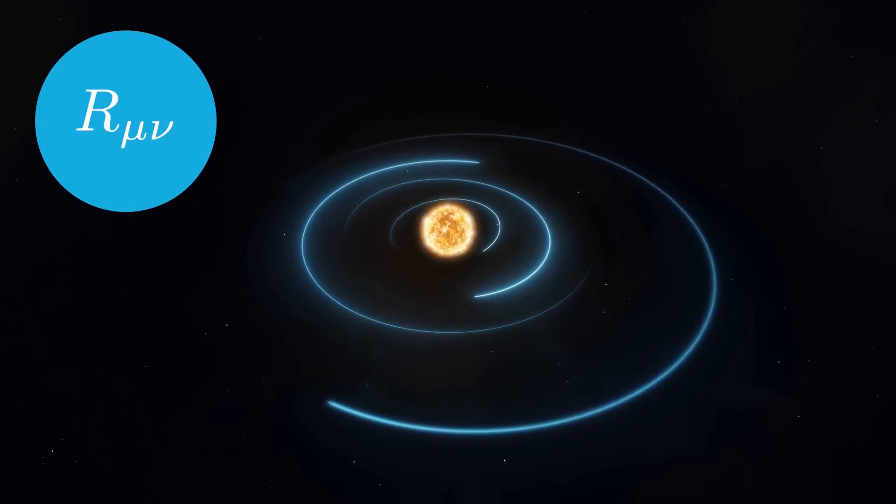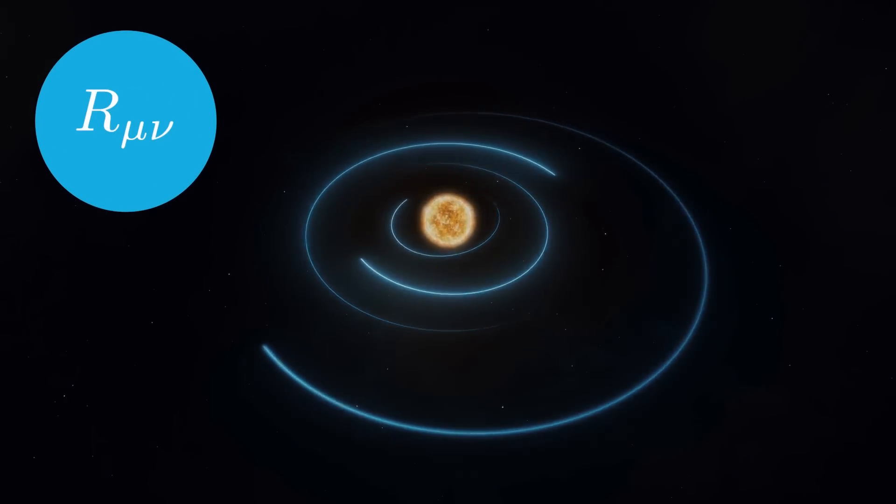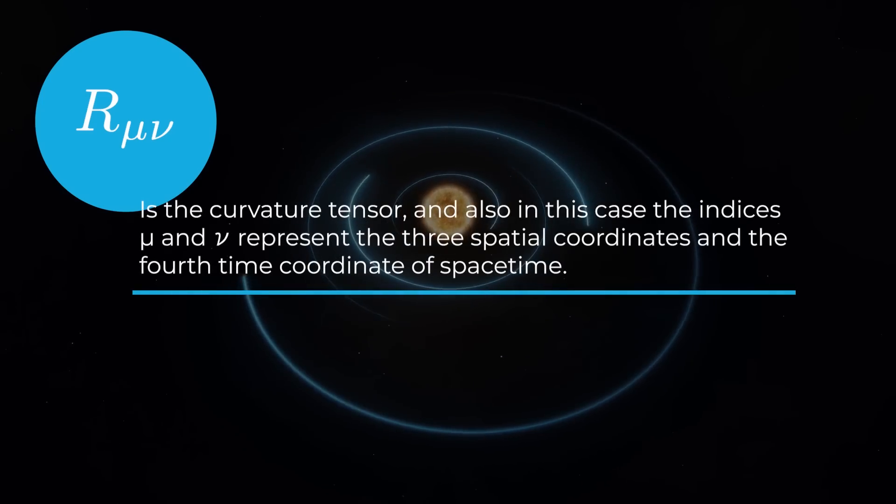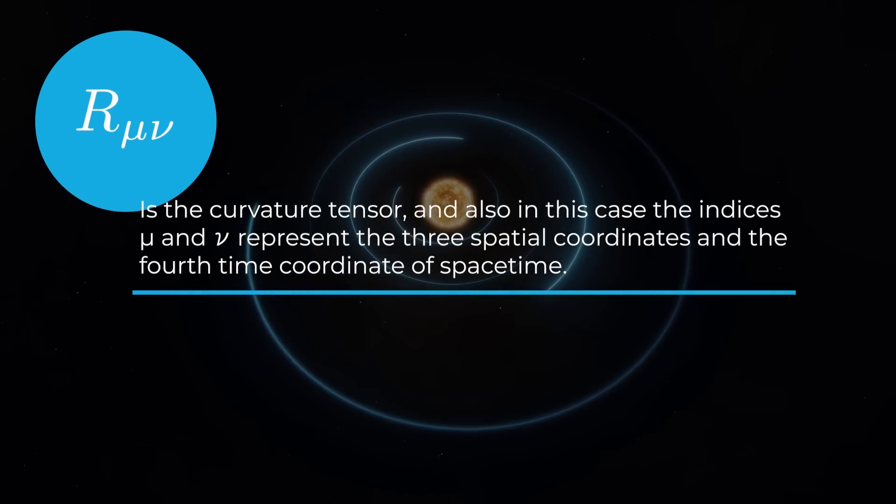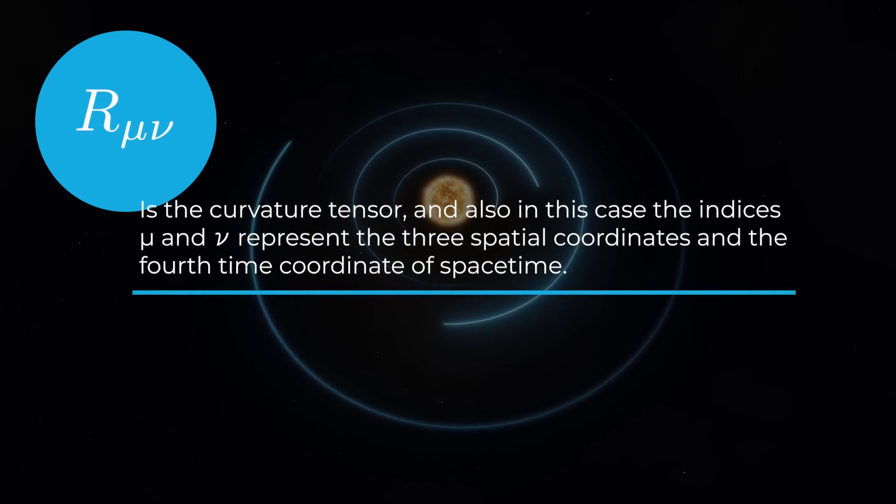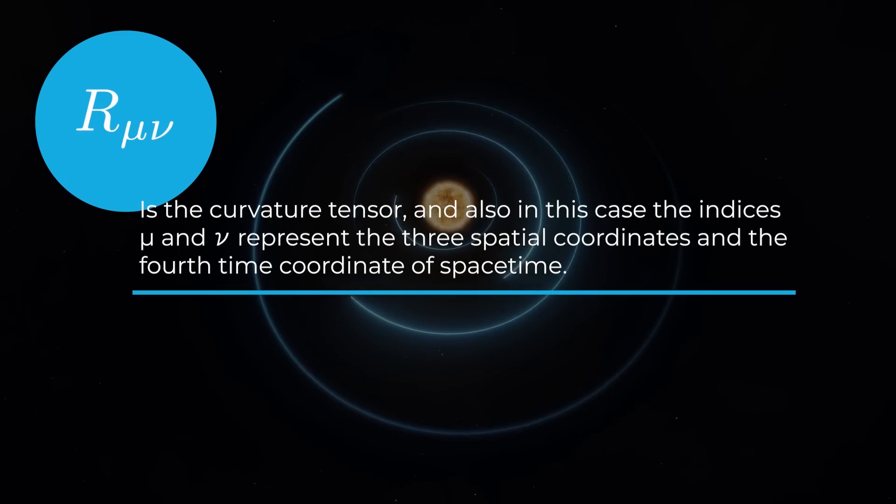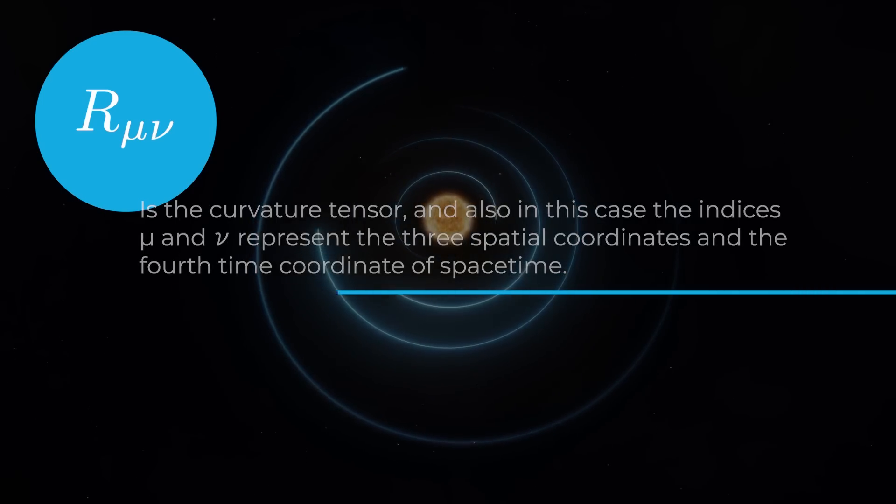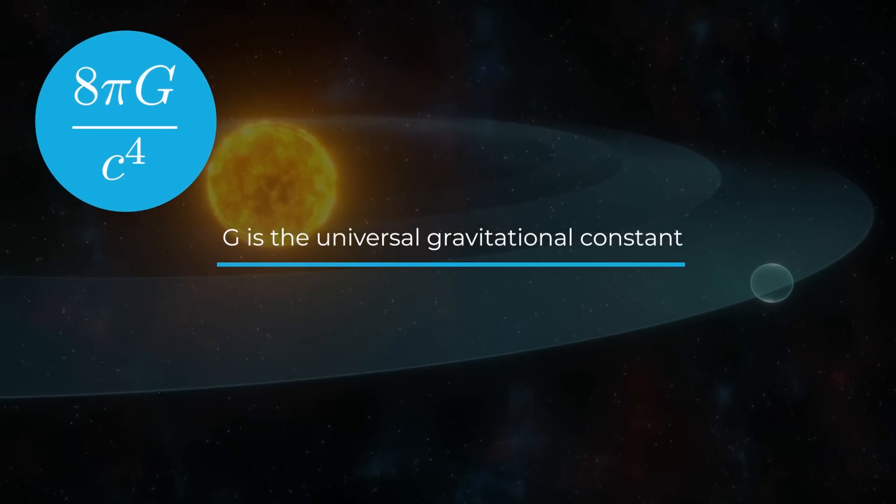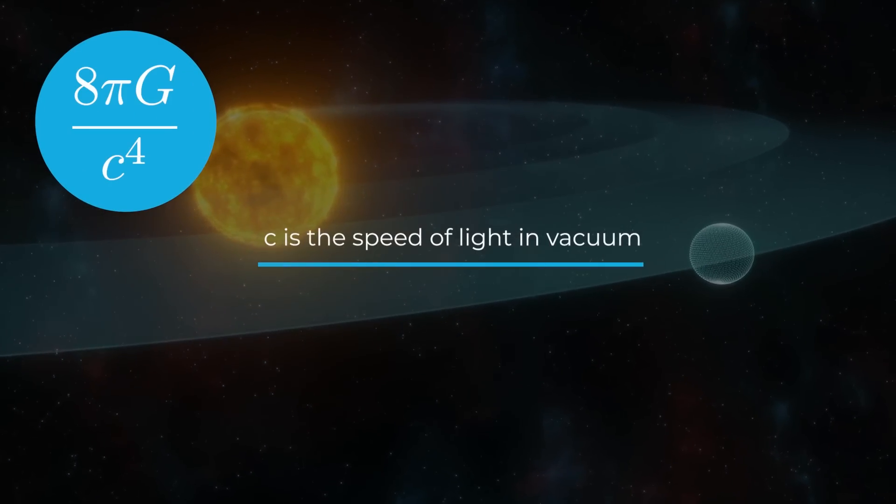R_μν and R take into account the curvature of spacetime. R_μν is the curvature tensor, and also in this case the indices μ and ν represent the three spatial coordinates and the fourth time coordinate of spacetime.